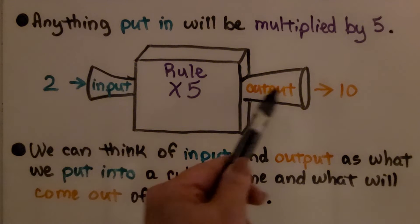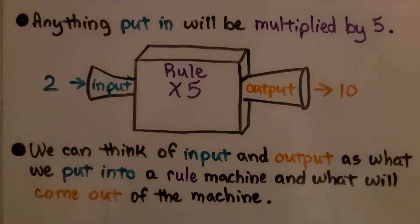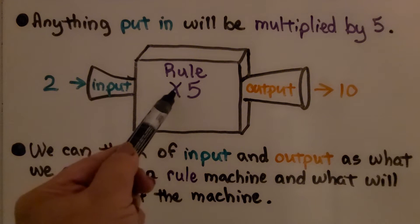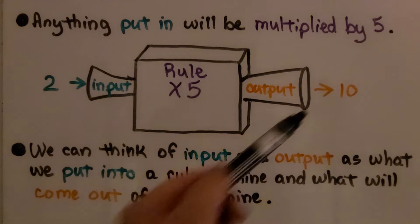We have an input and an output. We can think of input and output as what we put into a rule machine and what will come out of the machine. If I put in a 2, the rule is multiplied by 5, the output will be a 10.